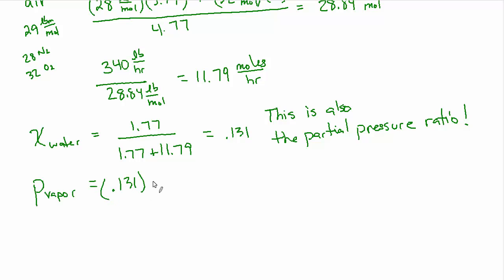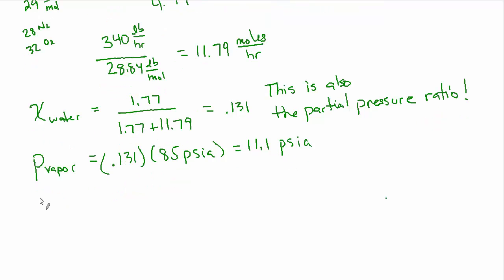So let's find out the partial pressure of the water vapor. 0.131 times 85 psi is 11.1 psia. And I think it's worth pointing out that this was very close to our assumption, which was 10 psi. But there's nothing special about that. If we had chosen a different partial pressure, it didn't have a big effect on the enthalpy that we would have chosen. So we still would have gotten a number very close to this.